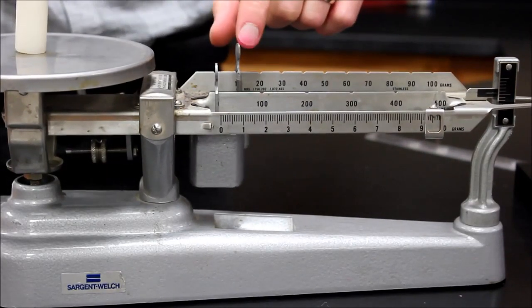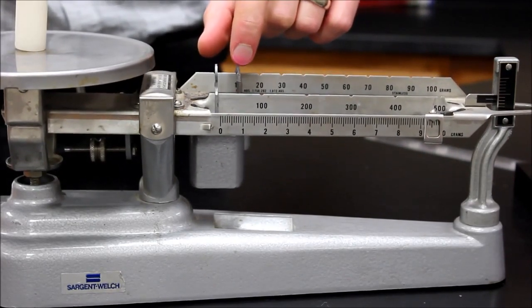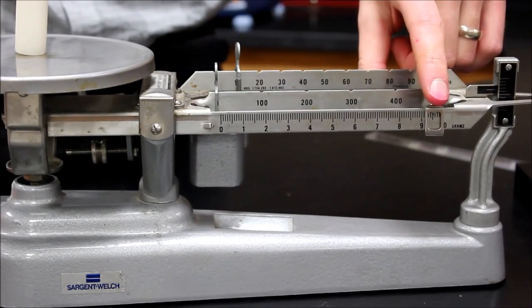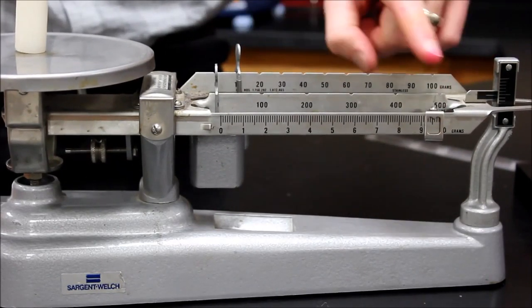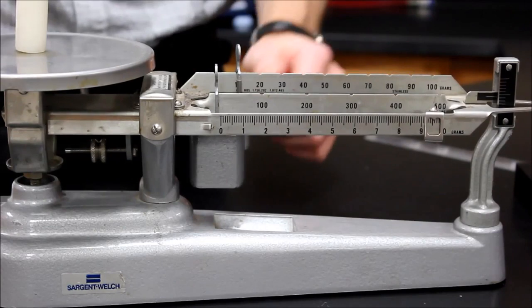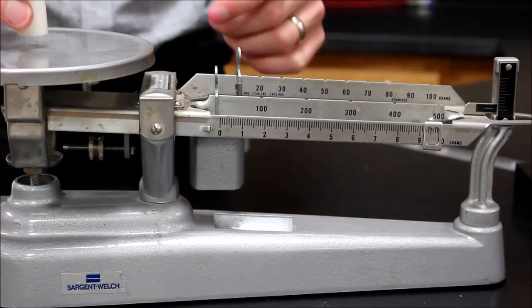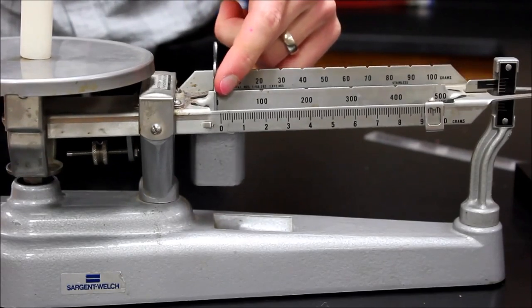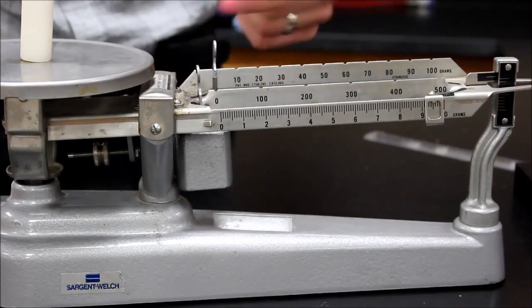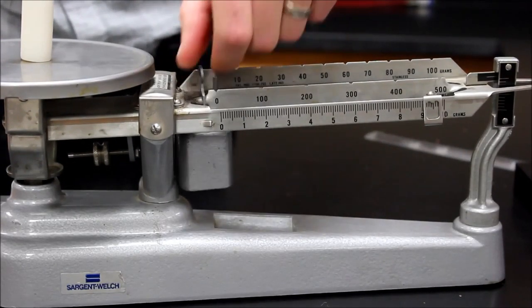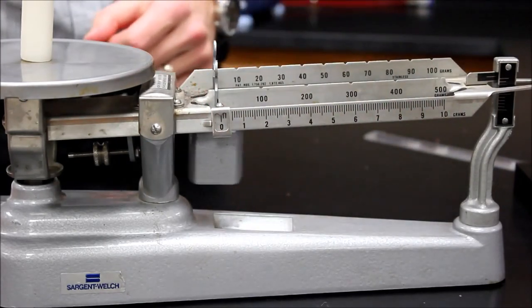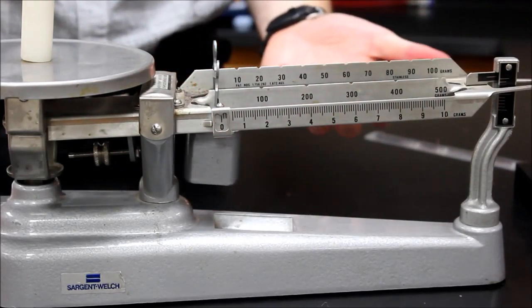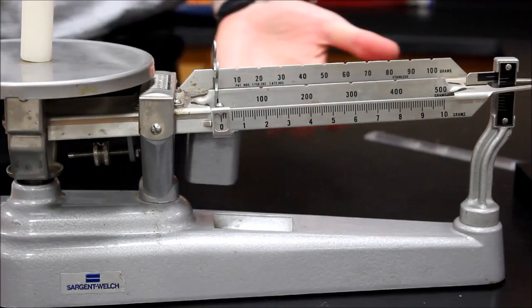I got that because I added 10 from this one plus the nine and a half. So 19 and a half is the mass for my candle. When I'm done I want to make sure that I put everything back to the beginning notches. Not too far or else it kind of messes it up here. Everything at the start. And now I write down my value of 19 and a half grams.